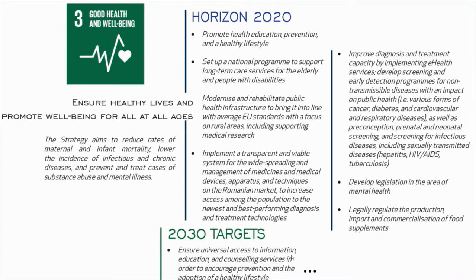Strategy Goal No. 3 — Good Health and Well-Being — aims to ensure healthy lives and promote well-being for all at all ages. The Strategy aims to reduce rates of maternal and infant mortality, lower the incidence of infectious and chronic diseases, and prevent and treat cases of substance abuse and mental illness.